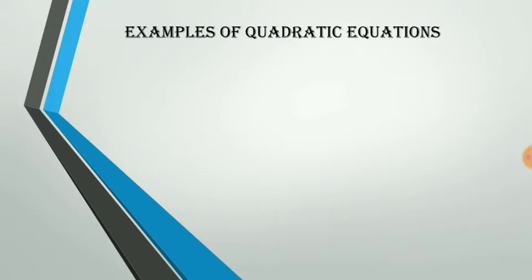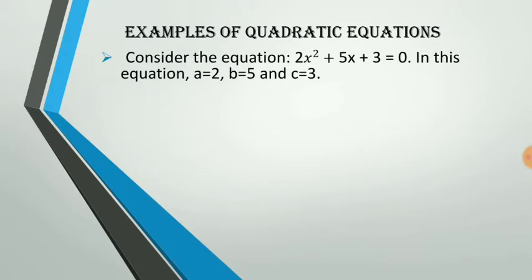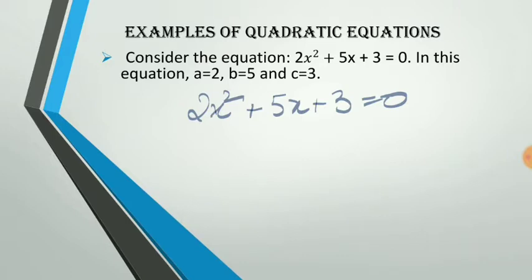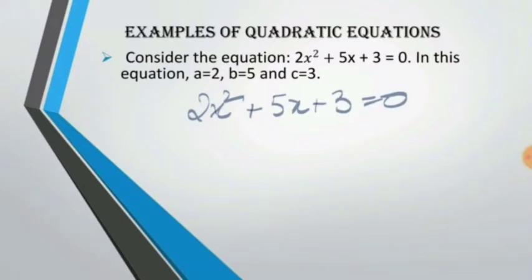Now let us take up a few examples of quadratic equations. Consider the equation 2x squared plus 5x plus 3 equal to 0. The general form of a quadratic equation is ax squared plus bx plus c equal to 0, where a is the coefficient of x squared, b is the coefficient of x, and c is the constant term. So here, a is equal to 2, b is equal to 5, and c is equal to 3.